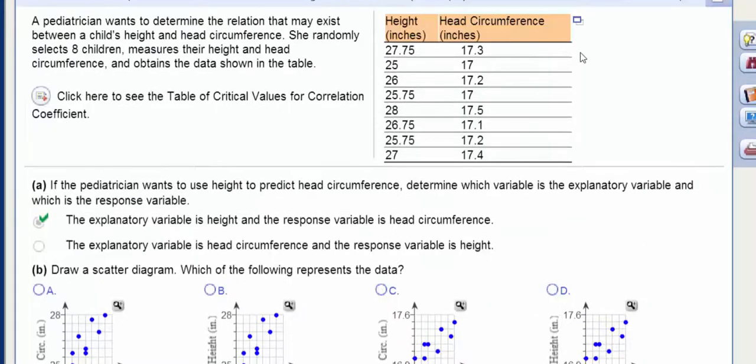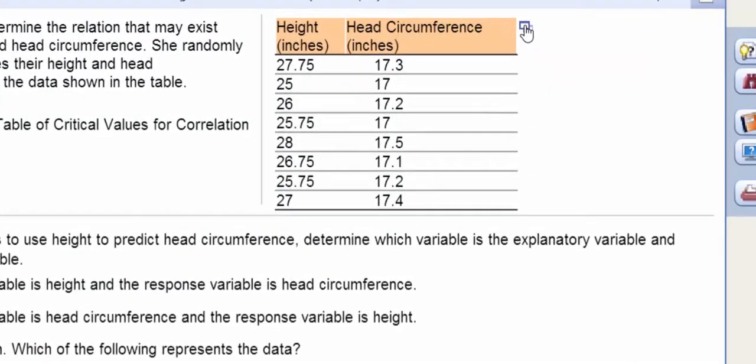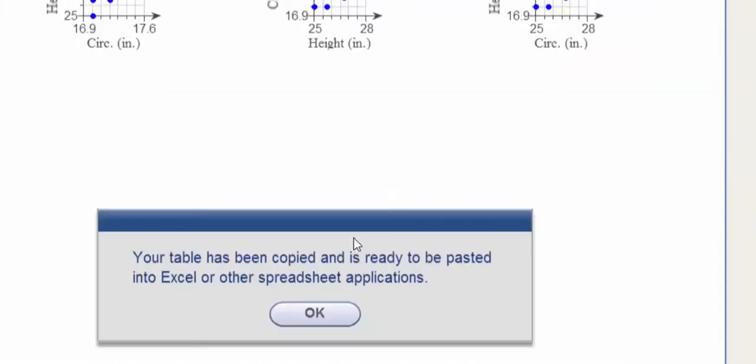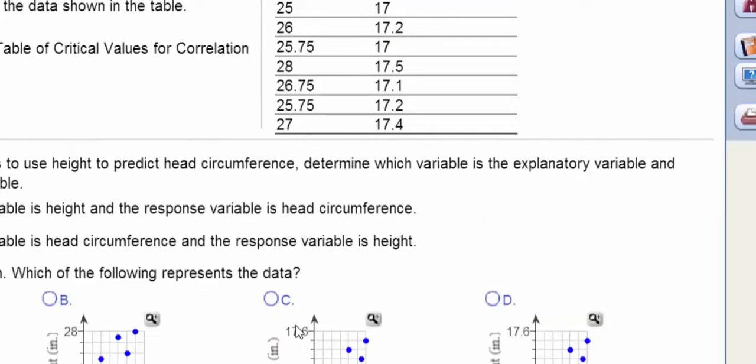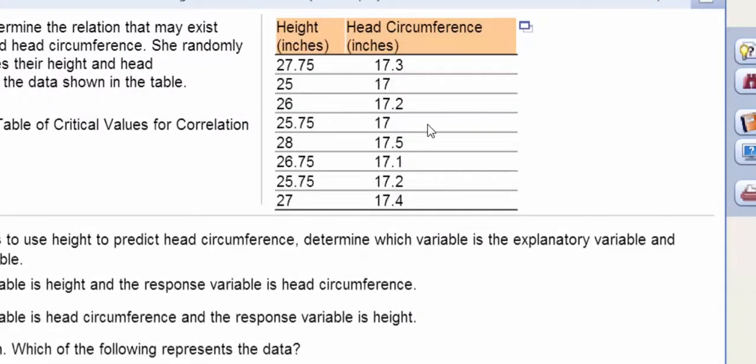So if we click on our little table icon and scroll down, it says our table's been copied. So I'm going to paste that into StatCrunch, this data here.